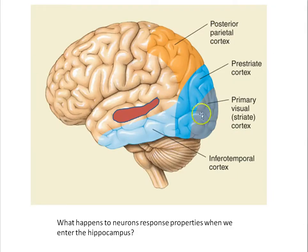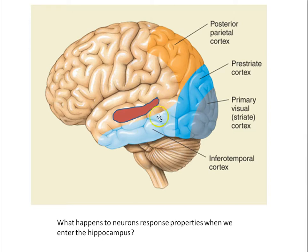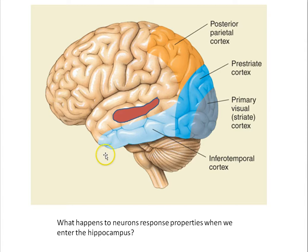This raises a question: what happens if you continue the journey and record from cells even farther along in that hierarchy of visual processing? We remember the hippocampus integrates information from visual, auditory, tactile, and other sources. Researchers had an opportunity to record from hippocampal cells and characterize their response properties. We'll see the results of that research in the next part.